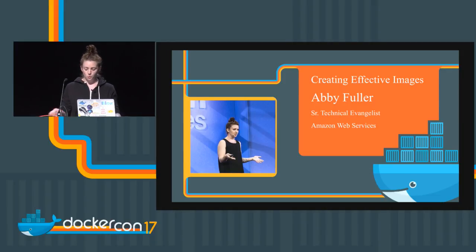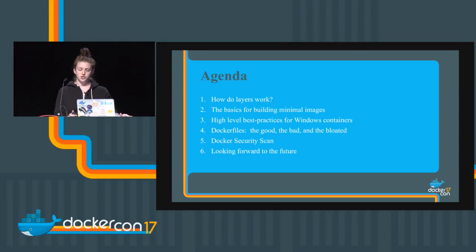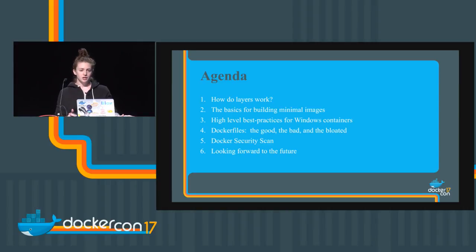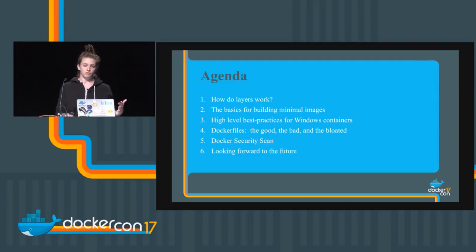So a couple of different tips — we'll walk through some language-specific ones and some high-level ones. We're going to go back to basics first and talk about how Docker layers work. We'll cover the basics for building more minimal images and why you should care. We'll cover Windows — this is the first DockerCon with Windows officially. We're going to go through some Dockerfile examples: the good, the bad, and the bloated. We'll talk about Docker security scan, and then cover some things to look forward to in the future. The main thing: just some practical tips you should be able to use in production or development right now.